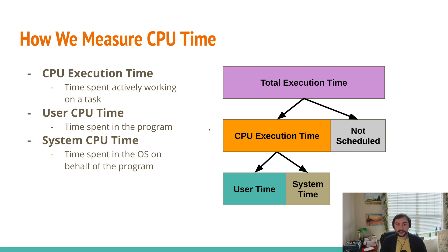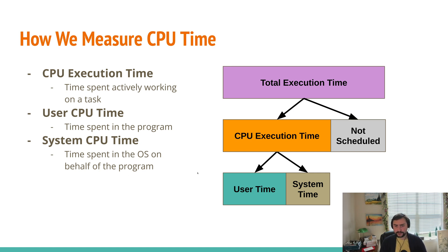Within our CPU execution time — the time our CPU is actively working on our task — that can further be broken up into our user CPU time and our system CPU time. Our user CPU time is the time spent actually inside of our application running our code. Our system CPU time is time spent in the operating system on behalf of our program, handling things like IO. Both of these contribute to our total CPU execution time. We often refer to user CPU time as time spent in user space, and system CPU time as time spent in kernel space.